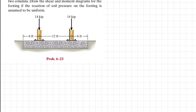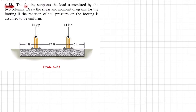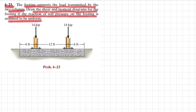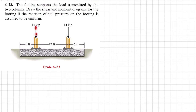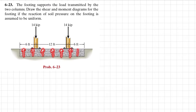Welcome back. Problem 6.23: the footing supports the load transmitted by two columns. Draw the shear and moment diagram for the footing if the reaction of soil pressure on the footing is assumed to be uniform. The load is 14 kips and 14 kips applied on each column, and the soil exerts a uniform pressure on the footing.